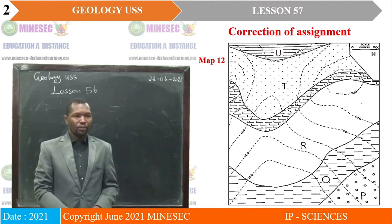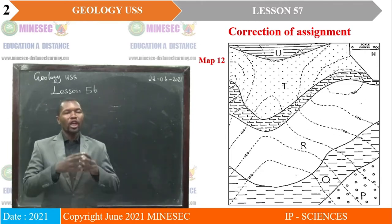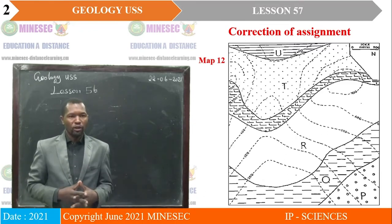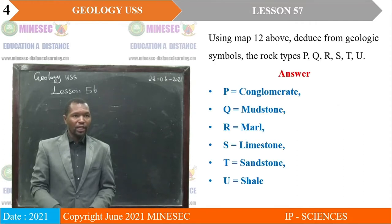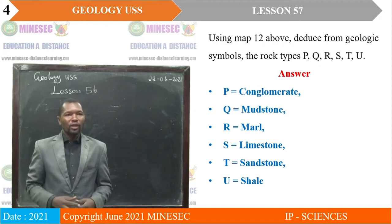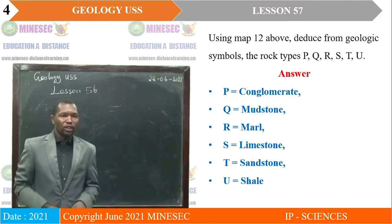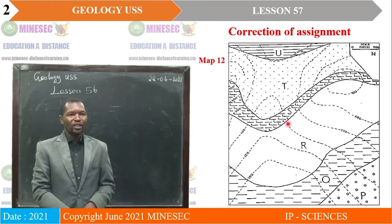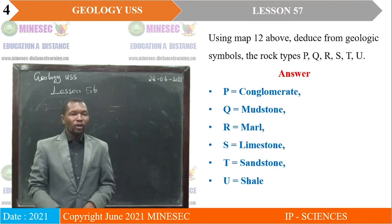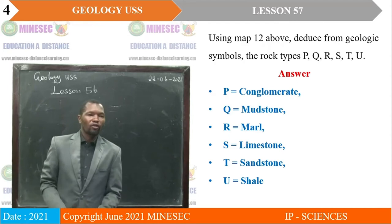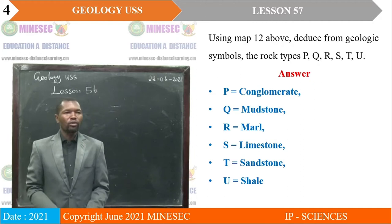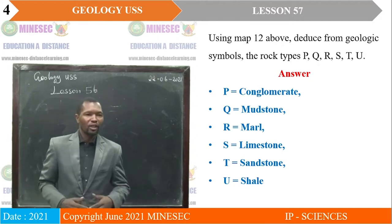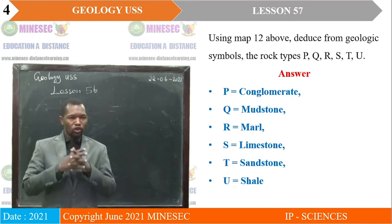From that observation, you should be able to interpret using conventional geological symbols for geological maps. Using map 12, we deduce: P stands for conglomerate, Q is for shale, R is for mudstone, S is for limestone, T is for sandstone, and U is for shale. That is how easy it is to work with conventional symbols on geological maps.